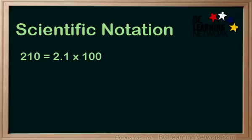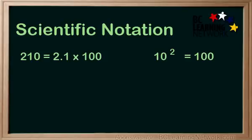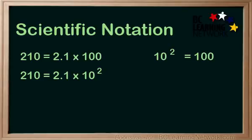Let's look at a couple of examples. 210 is equal to 2.1 times 100. Note that our first factor is a number between 1 and 10. 100 is 10 to the second power. So 210 is equal to 2.1 times 10 to the second in scientific notation.